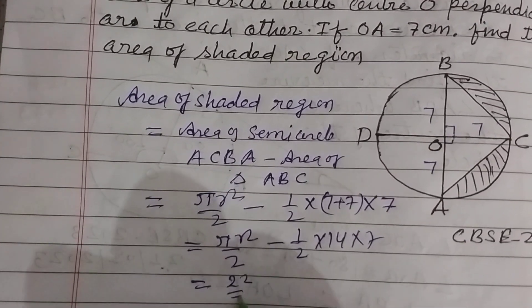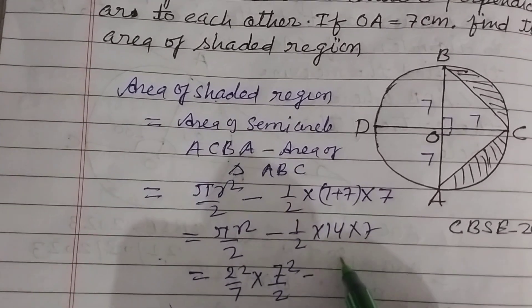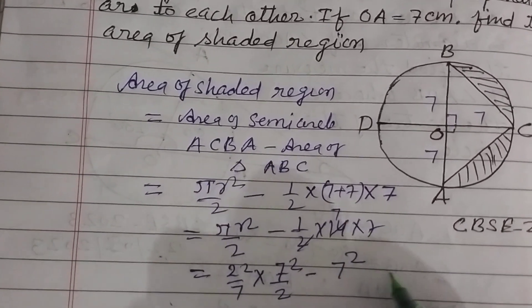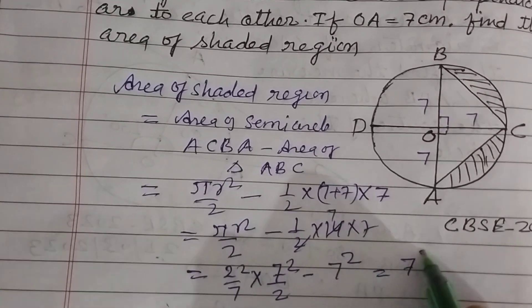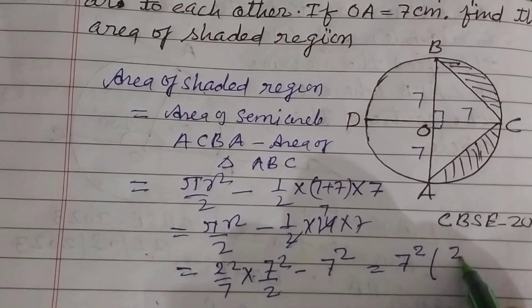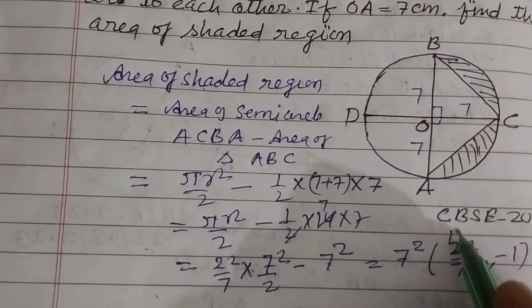π is 22/7, r is 7 here. r² by 2 minus - this is 7 times 7, so 7². 7² is common from both, so we get 22 over 7 into 2 minus 1. This is 11.